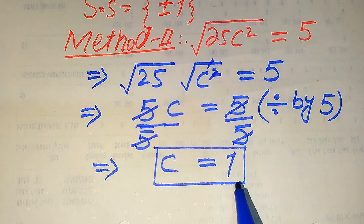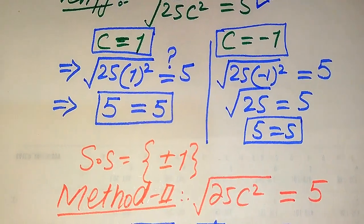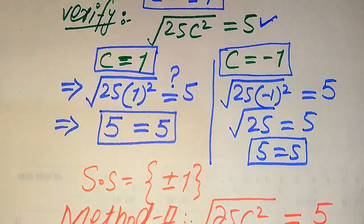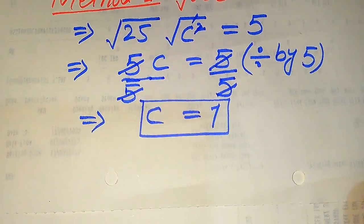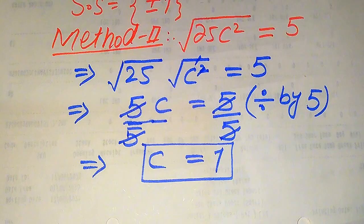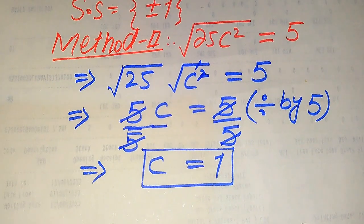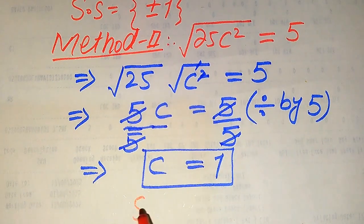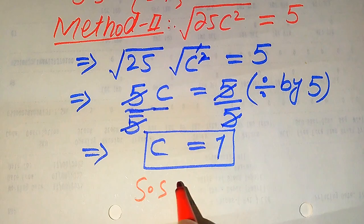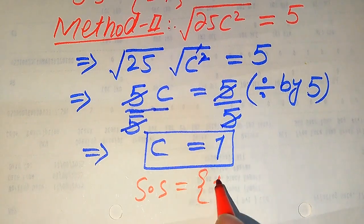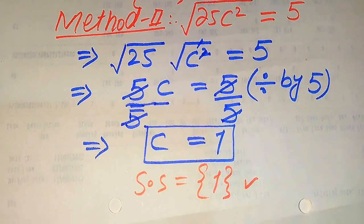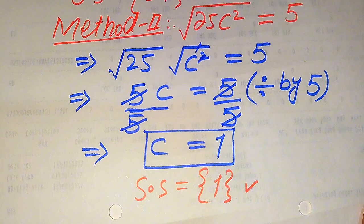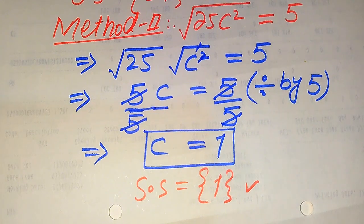In the second method we get only one root, C equals 1. We already verified in the first method that C equals 1 satisfies the question, so the solution set for the second method is C equals 1. This is the only solution from this method, and this is the final answer. Thank you so much for watching this video — please subscribe to my channel for more exciting videos.